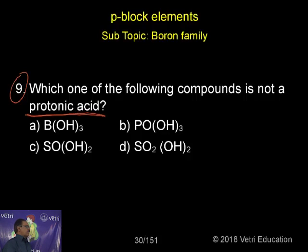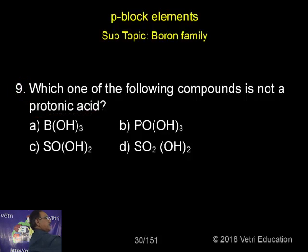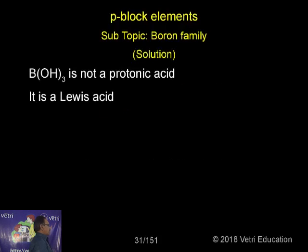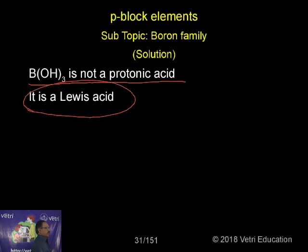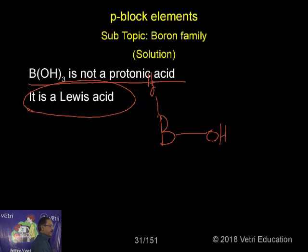So in terms of the Lewis acid point of view, we can determine which of the following is not a protonic acid. B(OH)₃ is not a protonic acid — it is a Lewis acid. Looking at B(OH)₃, with three OH groups attached to boron.